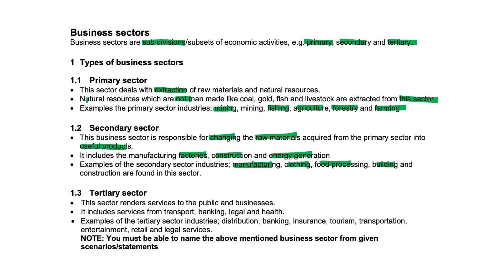The primary sector is all about natural resources, and the secondary sector is all about manufacturing. But the tertiary sector involves actually rendering services to the public — having products on display. It includes services from transport, banking, the legal sector and health. Some examples include distribution, banking, insurance, tourism and transportation.